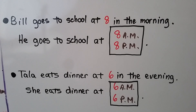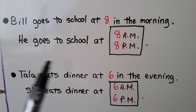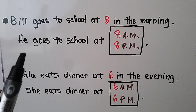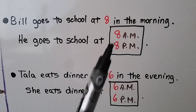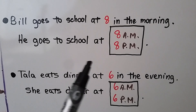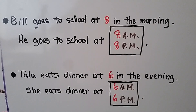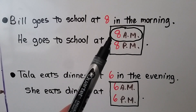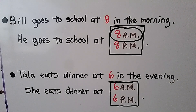Let's see if we can circle the correct answer. It says Bill goes to school at eight in the morning. So if it's in the morning, do you know if it's A.M. or P.M.? He goes to school at — if you answered 8 A.M. for the morning, you're right!